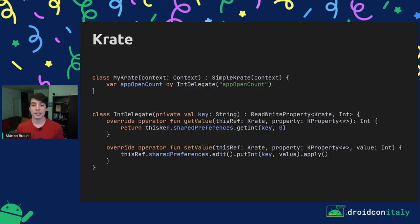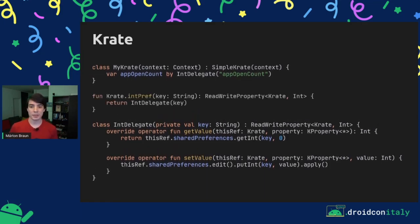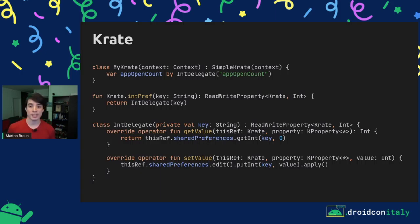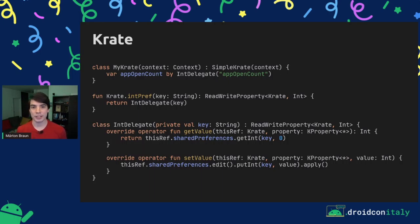Inside setValue, we start an edit on shared preferences, put in the int associated with the key that we have, and then apply our changes. This is already a working implementation. Crate cleans this up by introducing an intermediate layer — a factory function — which only takes the same parameter the class takes and just creates an instance of the class. This lets you hide the class itself as an implementation detail, as the factory function returns the interface type. Also, this factory function is an extension on Crate, which means it will only be available when you are writing code inside of a Crate — we're not polluting the global namespace with this.